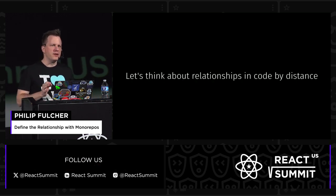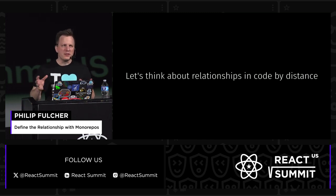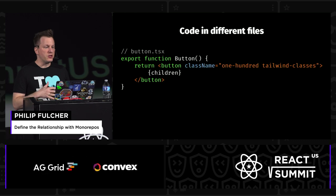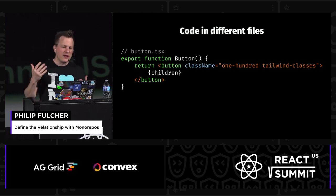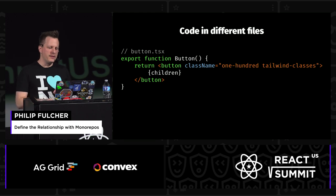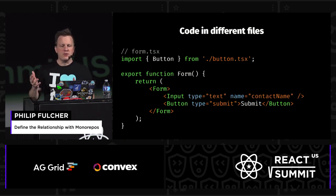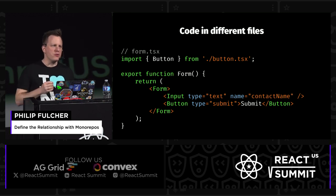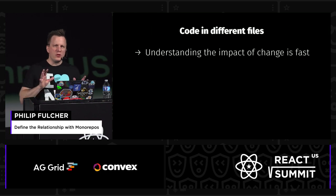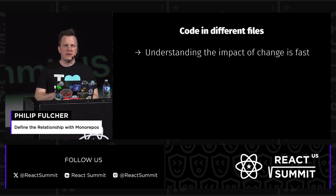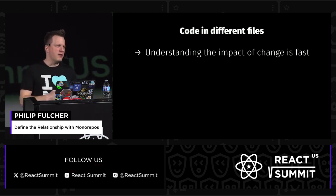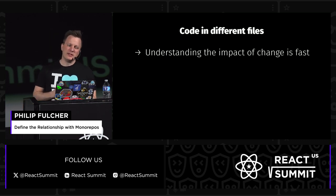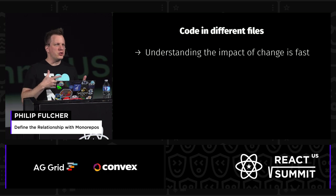Let's think about relationships in code in terms of distance. The closest that two pieces of your code can be related is just code that's in different files. You have a button component with all your Tailwind classes that keep you on-brand, and then you import that button into your form to use it. Now there's a dependency between the form and the button — the form doesn't work without the button. We do this all the time and kind of take for granted how great this relationship works. When you make a change in the button file, you can immediately see the change in the form — either a render in the browser, a compilation error, a test suite running, or even lint errors.